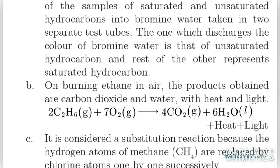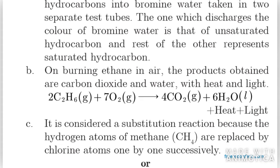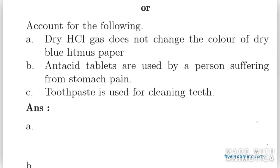This is what you can write in the A, B, and C parts respectively. Moving on to the next question: it says dry HCl gas does not change the color of dry blue litmus paper. This is because dry HCl gas never produces H+ ions. It should have H+ ions to see a change in the color of litmus paper — if there are no H+ ions, then there is no change.